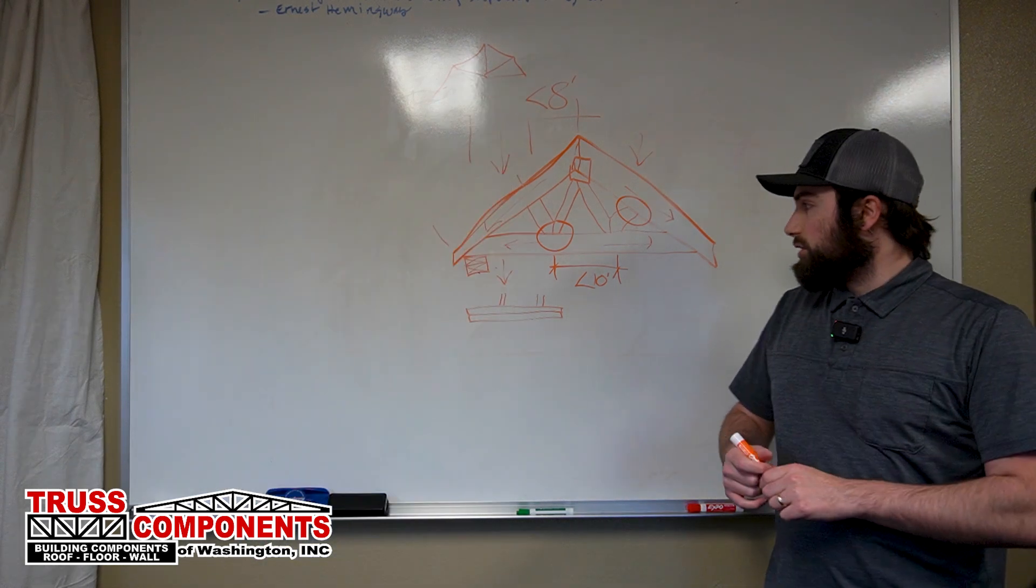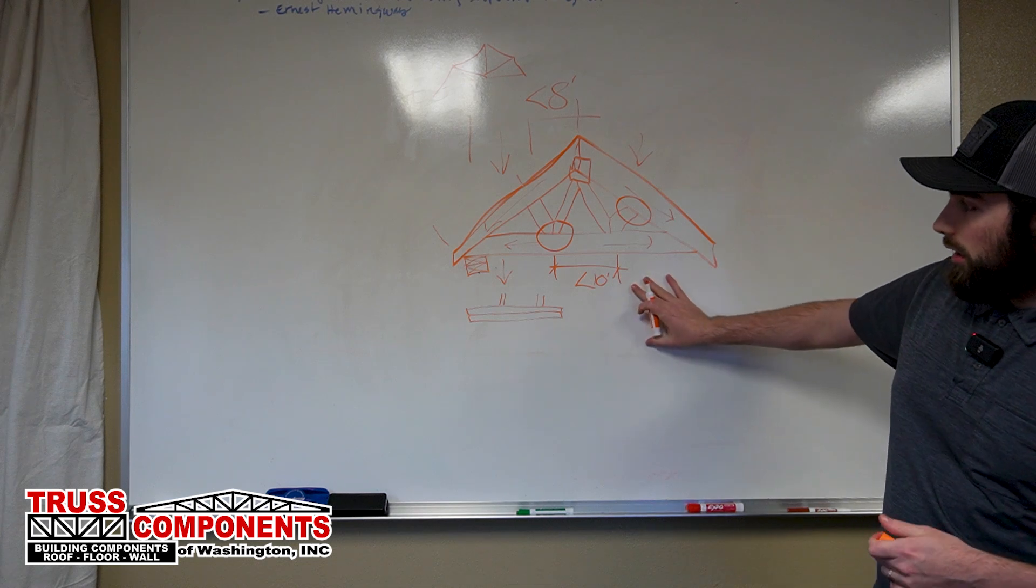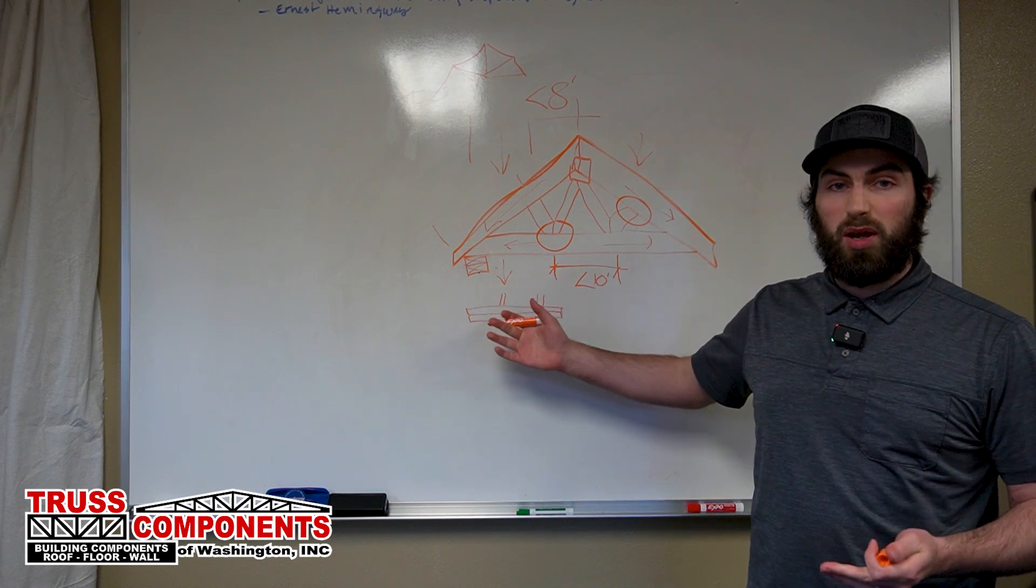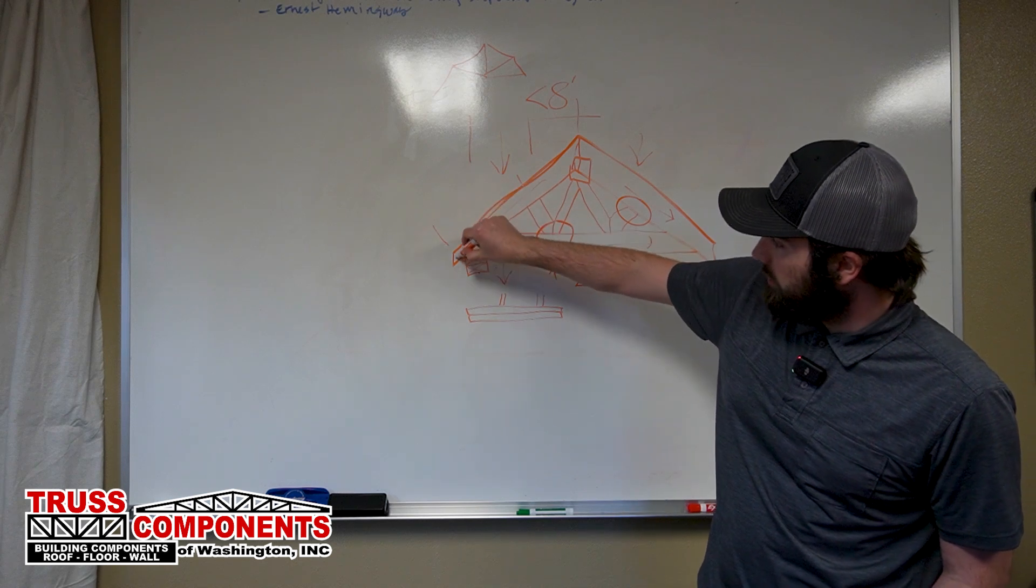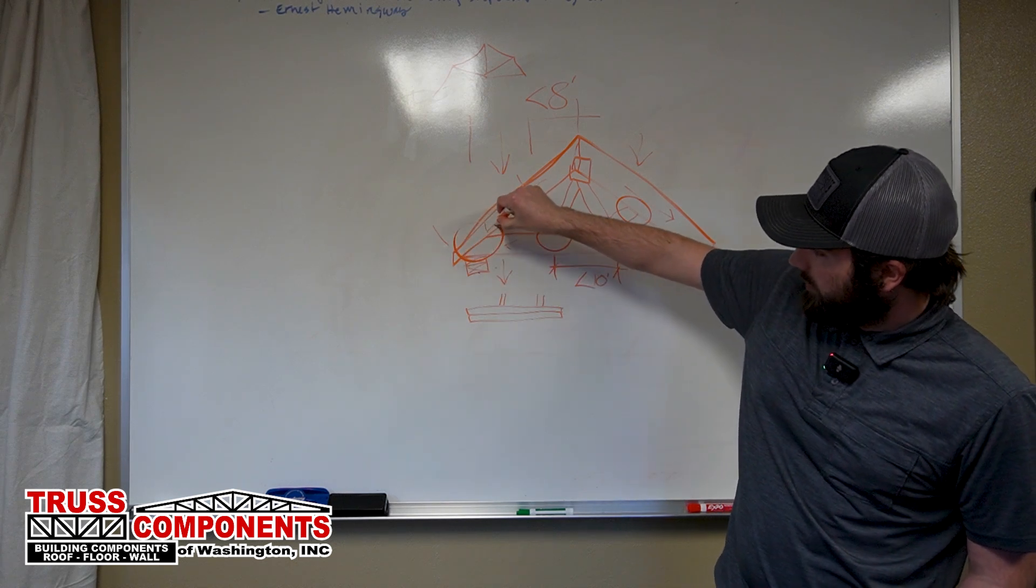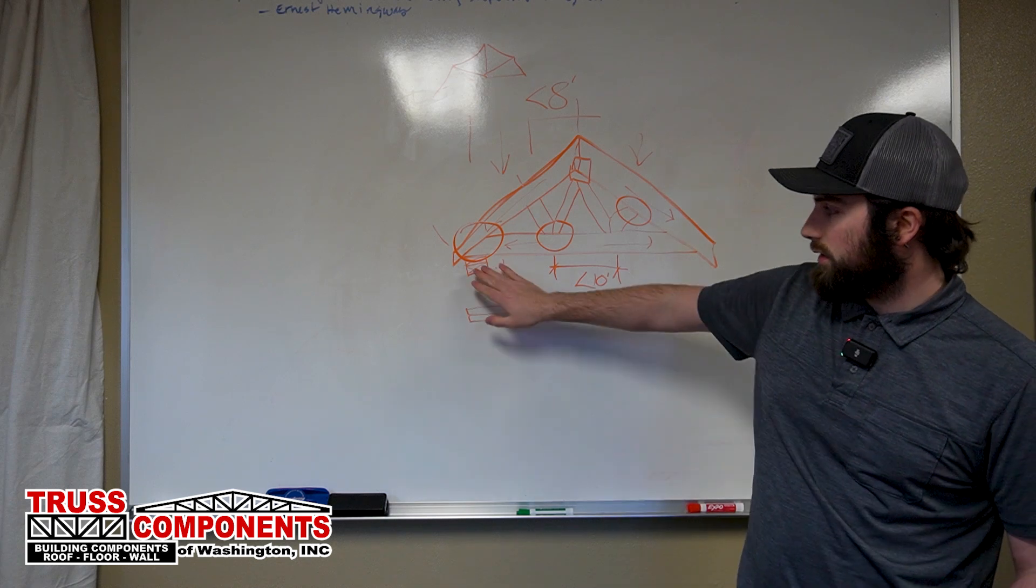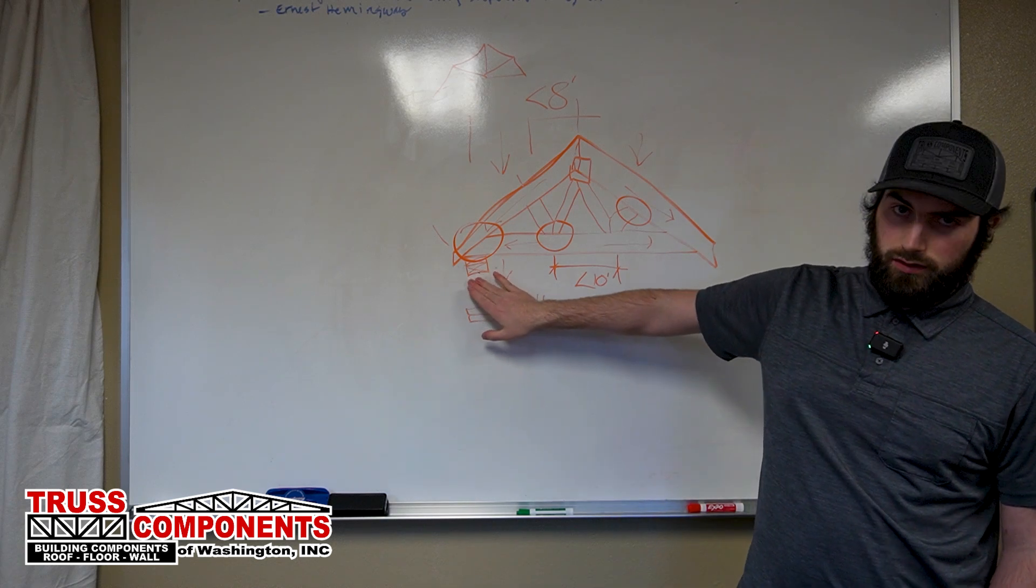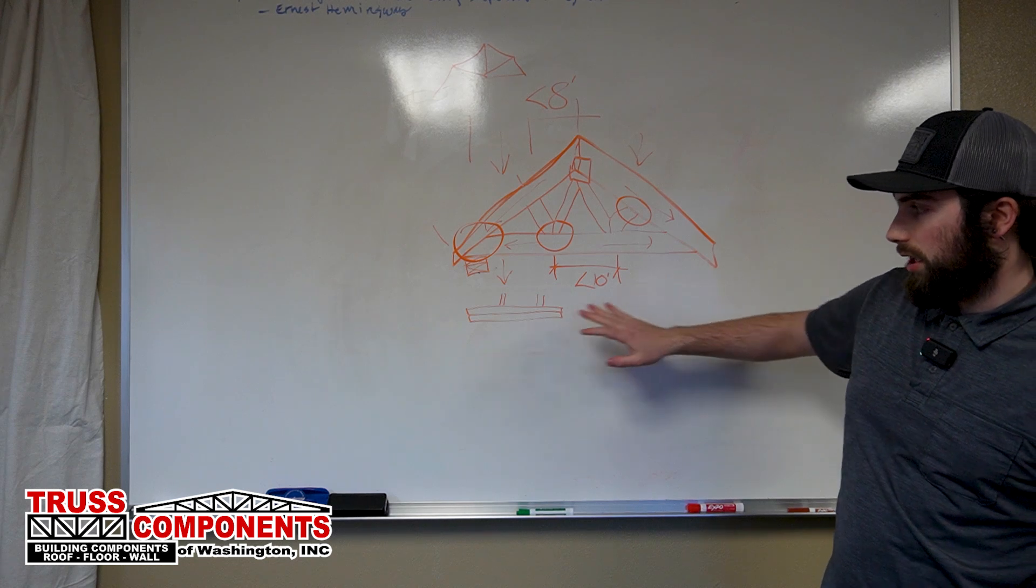That addresses our chords and our webs. We also have a special joint you could call it, which is the heel. So the heel refers to where the truss sits over the exterior wall, and that's typically the end of the truss.